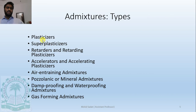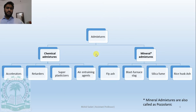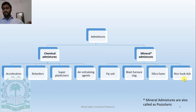There are many types of admixtures — plasticizers, super plasticizers, retarders, accelerators, air entraining admixtures, pozzolanic, damp proofing, gas forming, air detraining, alkali-aggregate expansion inhibiting admixtures, grouting, corrosion, bonding, visceral, germicidal, and coloring admixtures. A further classification divides them into chemical admixtures — such as accelerators, retarders, super plasticizers, and air entraining agents — and mineral admixtures, also known as pozzolanic materials, which include fly ash, blast furnace slag, silica fumes, and rice husk ash.